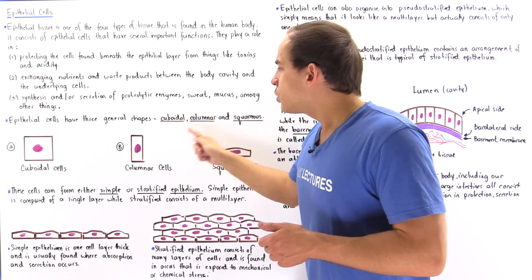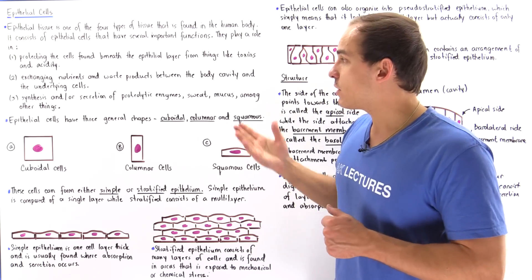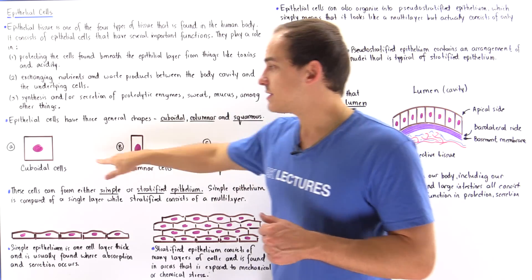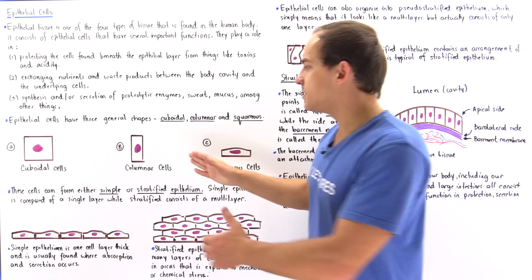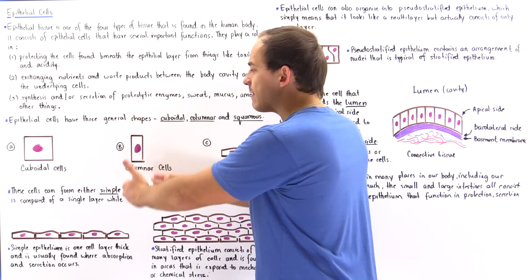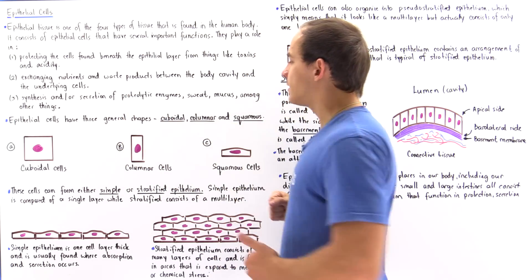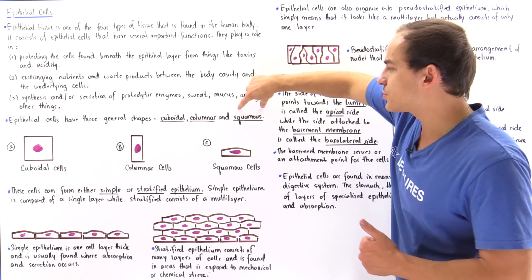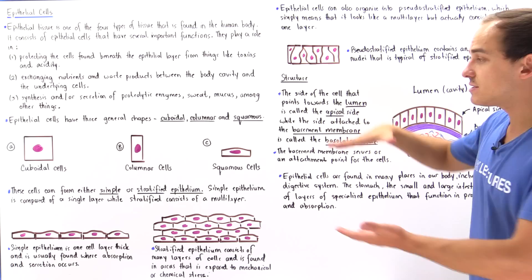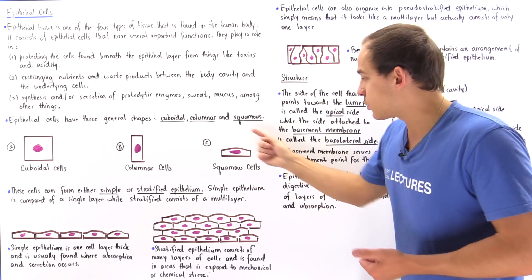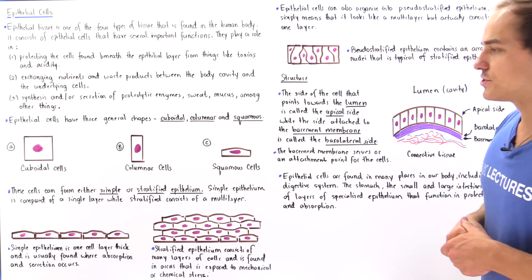Cuboidal simply means that the shape of our epithelial cell is that of a cube. Columnar simply means we have these rectangular-like columns. And squamous simply means our cells are very flat — so they look something like this.